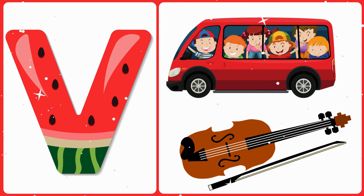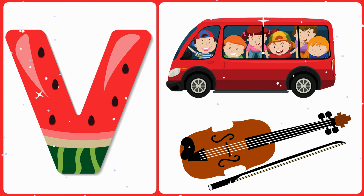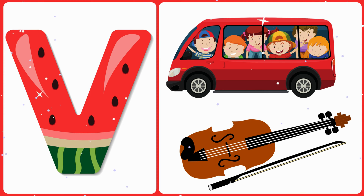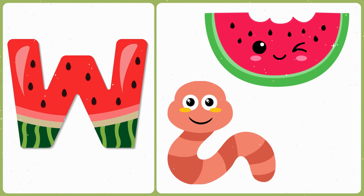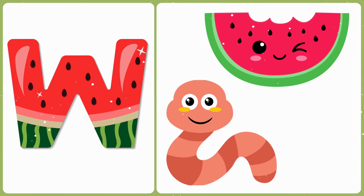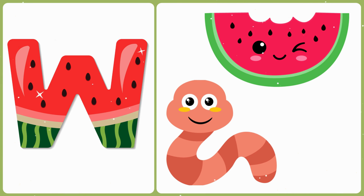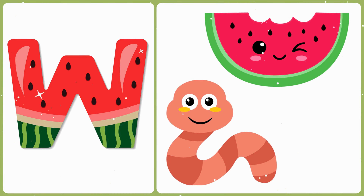V — V is for violin. W — W is for watermelon, W is for worm.